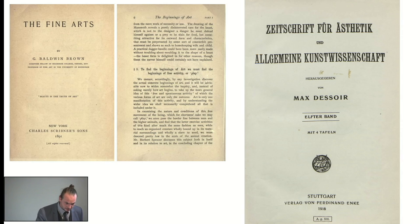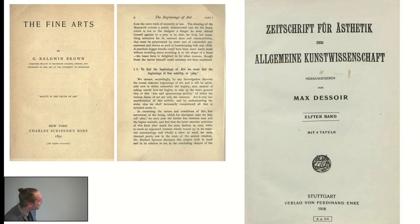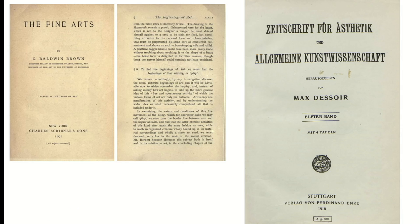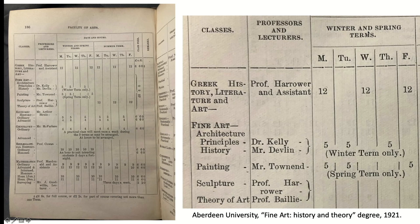Opé's close colleague and friend Gerard Baldwin Brown, chair of fine art at Edinburgh University, published in 1891 a textbook titled The Fine Arts, with the motto 'beauty is the truth of art' — clearly aligned with this strong aestheticist credo we also see in Einstein or Dessoir. In a book like that we find anthropological reflections about the origins of art and an attempt to bring art study into close touch with disciplines such as psychology or prehistoric archaeology. This also informed what I believe is the first university degree in the history of fine art at a British university: the degree in fine art, history and theory launched at Aberdeen University in 1921.